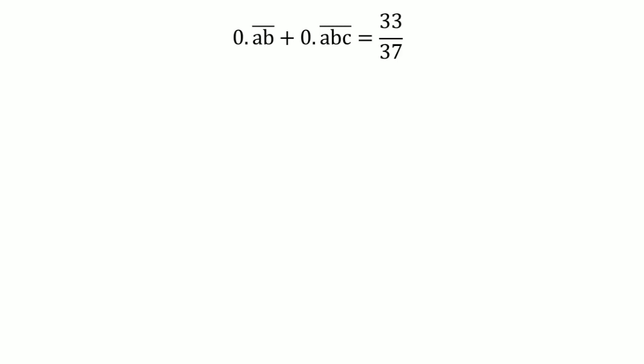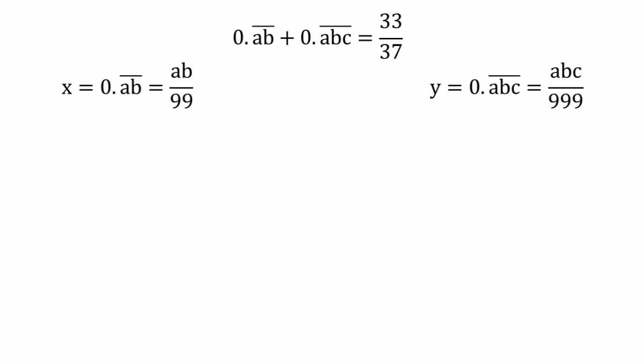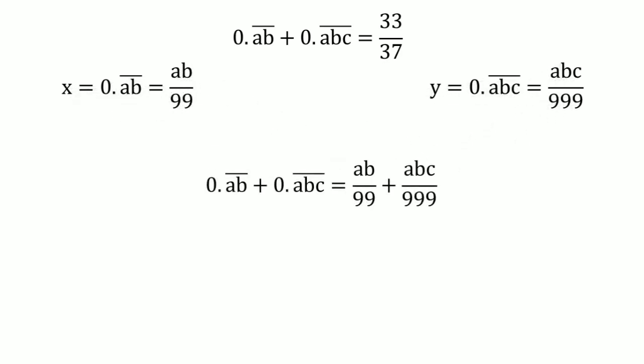Now, given that 0.ab̄ + 0.ab̄c̄ = 33/37, let x = 0.ab̄, so x = ab/99. Similarly, let y = 0.ab̄c̄, so y = abc/999. Adding these, we have 0.ab̄ + 0.ab̄c̄ = ab/99 + abc/999.